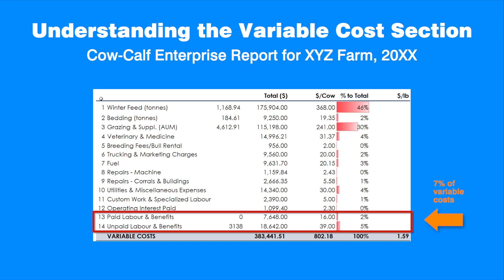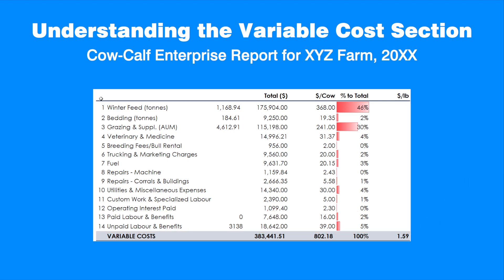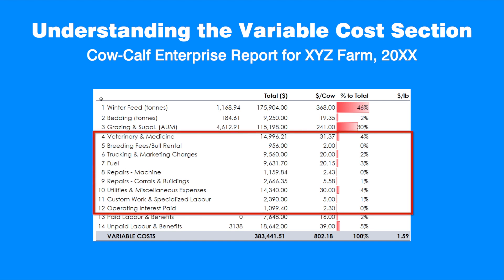Unpaid labor is an opportunity cost that must be recognized as it contributes to the cost of production. Other variable costs include veterinary and medicine, breeding, trucking and marketing, fuel, repairs, utilities, custom work, and operating interest paid. In this example, these costs are estimated to be $118.83 per cow, or about 15% of variable costs.